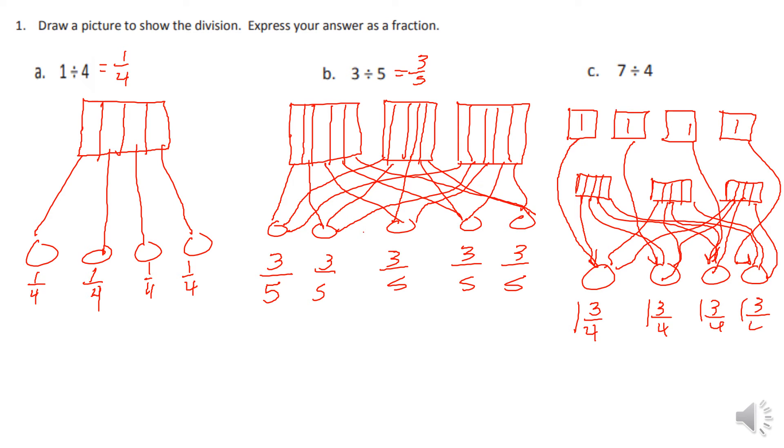So each one got one and three fourths. Now if we wanted to check that, because we know we had seven crackers, we could add these back up. We know it would be one plus one plus one plus one, so we have four. Plus, we have three fourths, plus three fourths, plus three fourths, plus three fourths, which is going to equal three, six, nine, twelve fourths, which is also equal to three. So four plus three gives us seven. So you can see it did work.